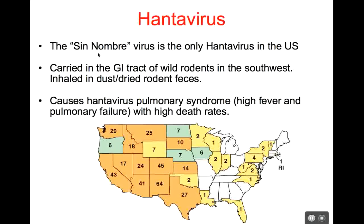This virus is carried in the gastrointestinal tract of wild rodents in the American Southwest. It's released in their feces, and then you inhale dust that has the dried rodent feces in it, causing Hantavirus pulmonary syndrome — a lung infection. Rodent feces turn into dust very quickly, and you inhale dust all the time. Hantavirus is extremely pathogenic, causing high fever, pulmonary failure, and very high death rates — 33% of patients die from Hantavirus infections.